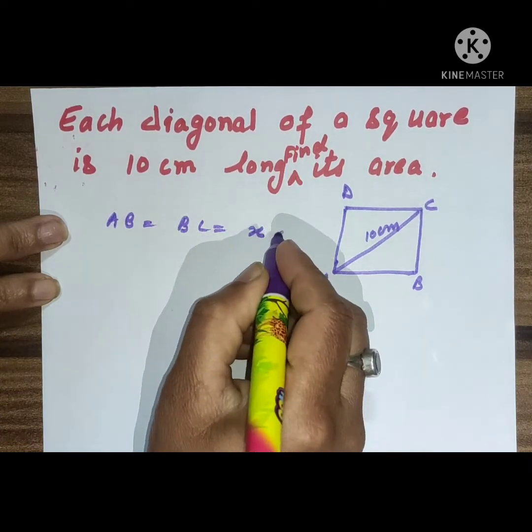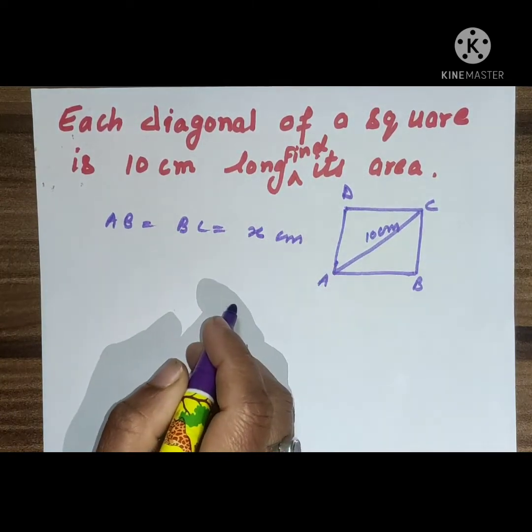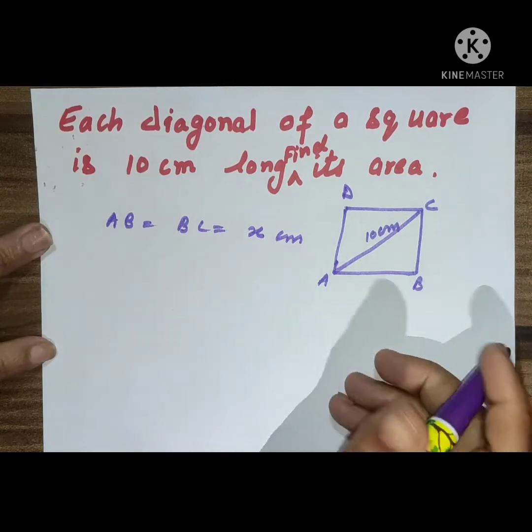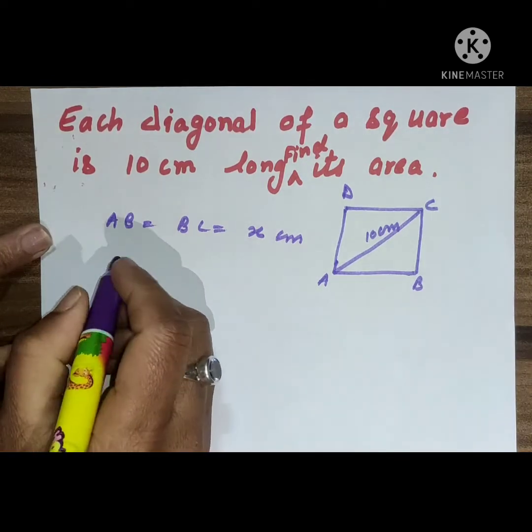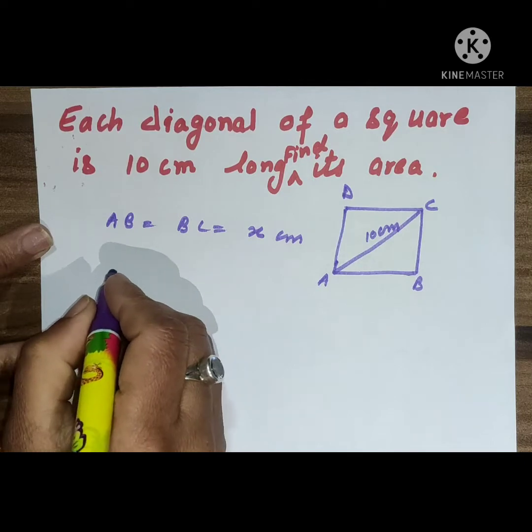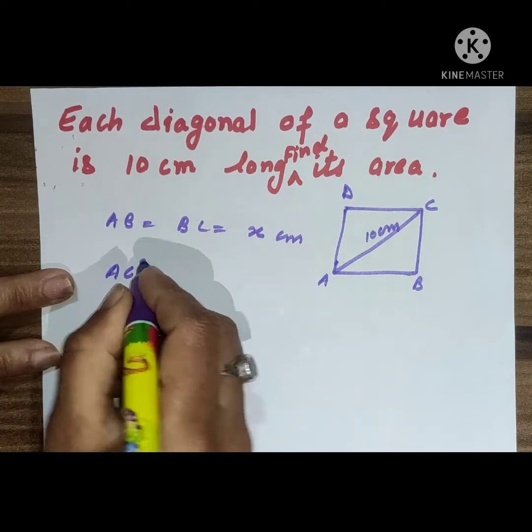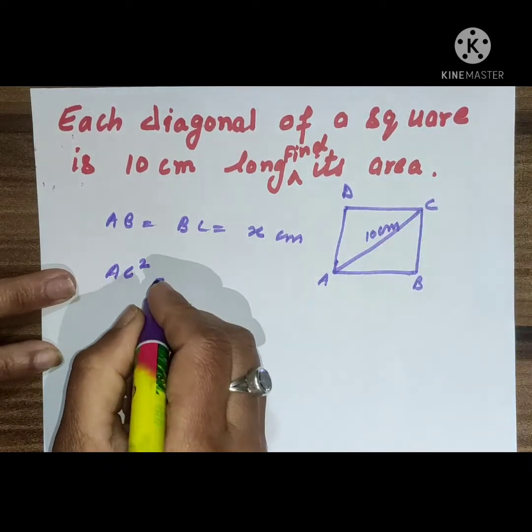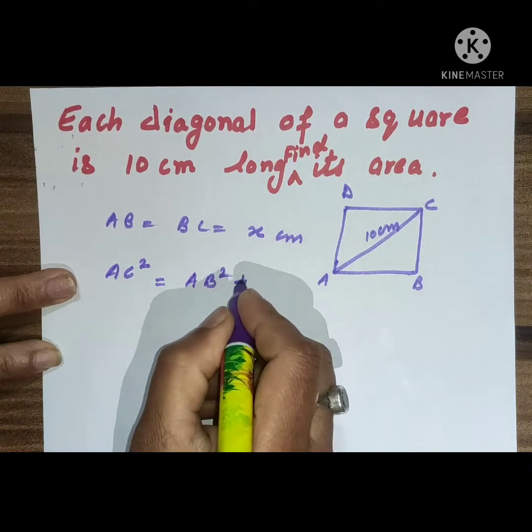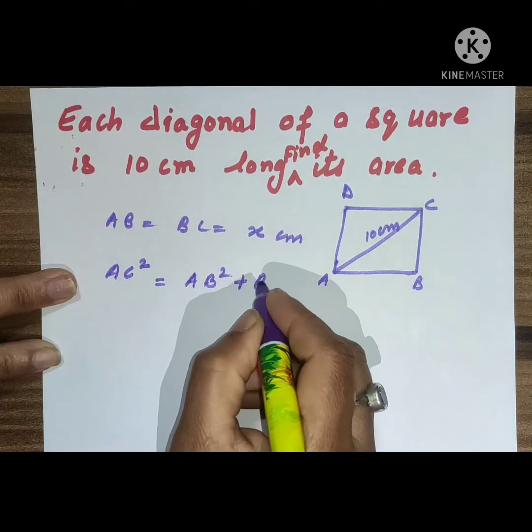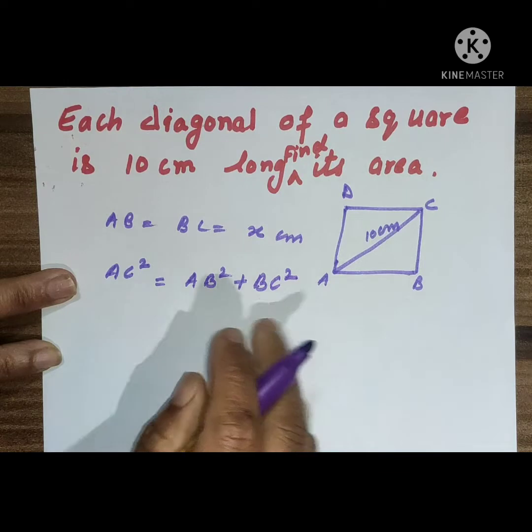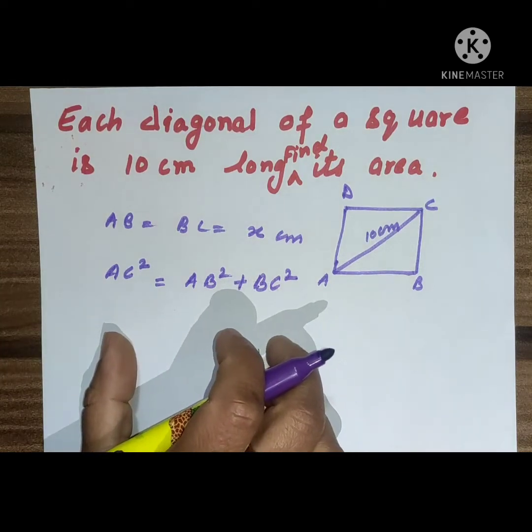So we will find x by using the Pythagorean theorem. What is Pythagorean theorem? Pythagorean theorem is AC squared equals AB squared plus BC squared, the sum of the other two sides squared.